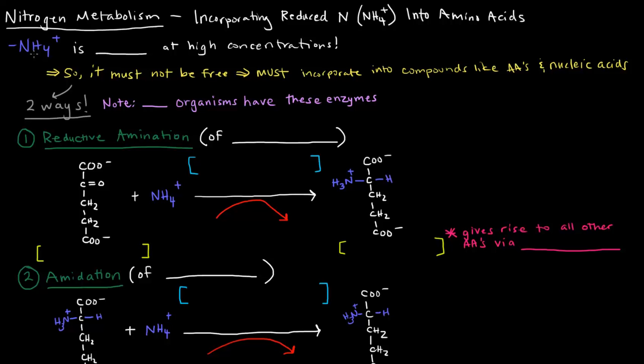In the last video, we talked about ammonium ion being a reduced and usable form of nitrogen. Now we're going to talk about how we incorporate that nitrogen into amino acids. Ammonium ion is toxic at high concentrations, so if it's freely floating in an organism, that's bad. We don't want ammonium ion to be free, so we must incorporate it into compounds like amino acids and nucleic acids. We have to use it up so that it's not free floating. There are two ways to do this.